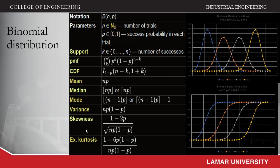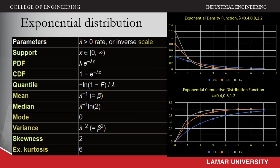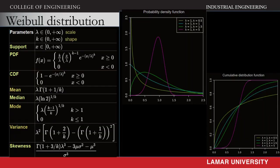The distributions that we will need to understand and consider are the binomial distribution, the Poisson distribution, the exponential distribution, and the Weibull distribution. If you are not familiar with them, please review the other videos associated with the description of these probability distributions.